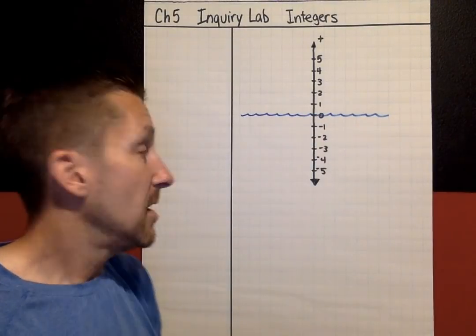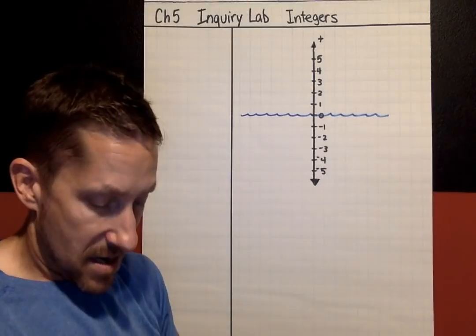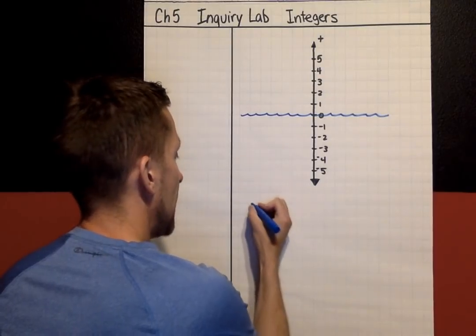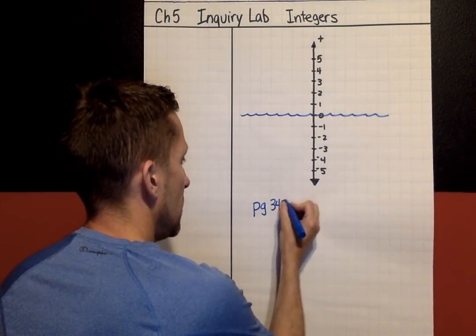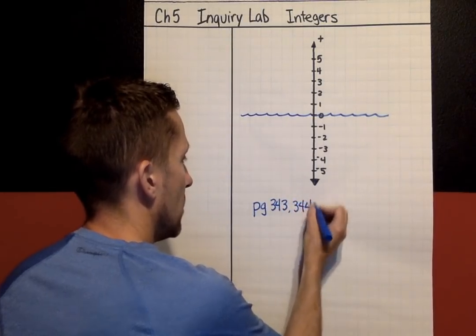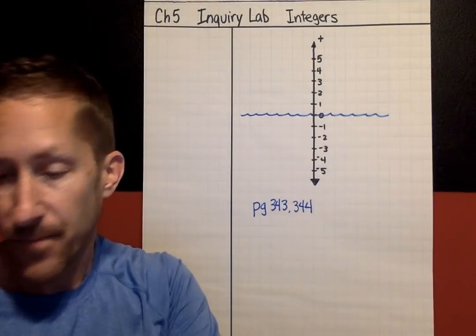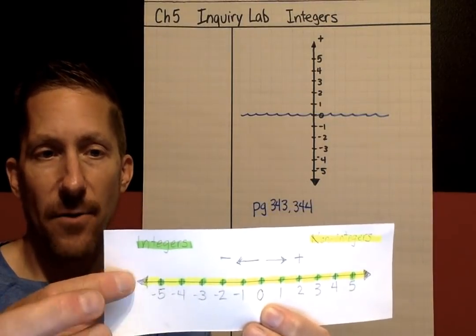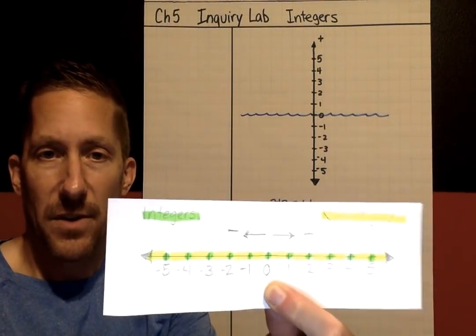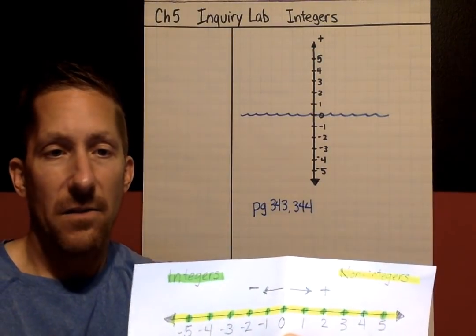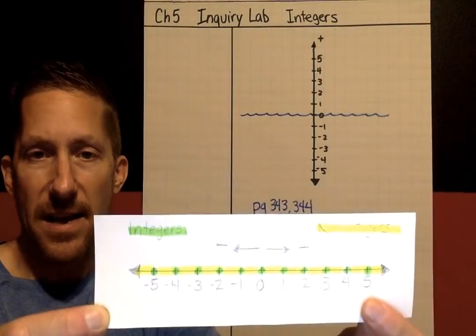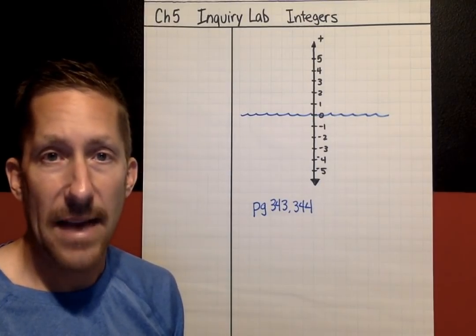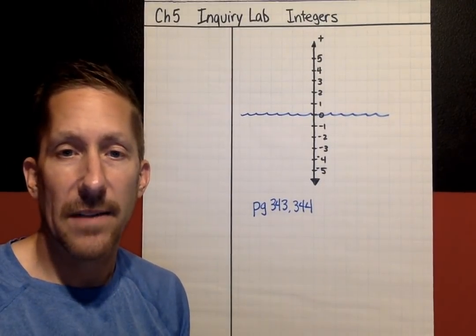Now I think you're ready to work in your workbook. The two pages that go with this lab are pages 343 and 344. Make sure you don't lose your number line — it will be hole-punched, so make sure it's part of your notes for Chapter 5. It's a great model for integers and non-integers. That does it for the Chapter 5 Inquiry Lab on integers. I'll see you again soon for Lesson 1.